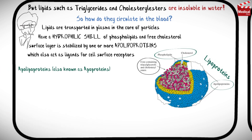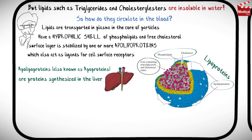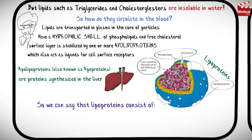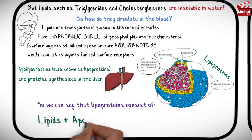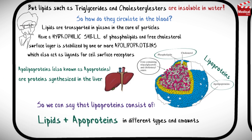Apolipoproteins, also known as apoproteins, are proteins synthesized in the liver. So we can say that lipoproteins consist of lipids and apoproteins in different types and amounts.